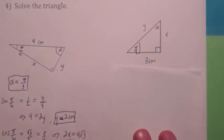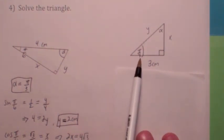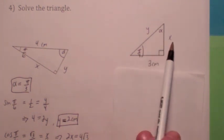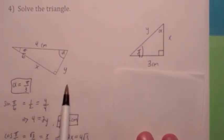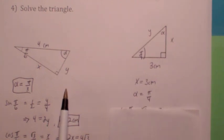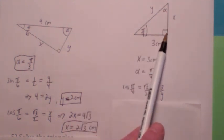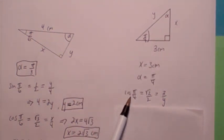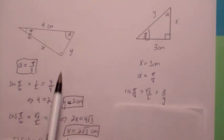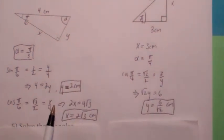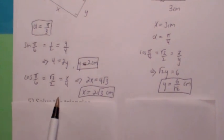If you're given this angle is pi over 4 and this side is 3, then this other angle also has to be pi over 4, and this other leg has to be 3 as well because this is an isosceles right triangle. So x equals 3 and alpha equals pi over 4. All you need to do now is find y. Using cosine: cosine of pi over 4 equals 3 over y, which is also radical 2 over 2. Cross-multiplying and solving for y gives you 6 over the square root of 2.